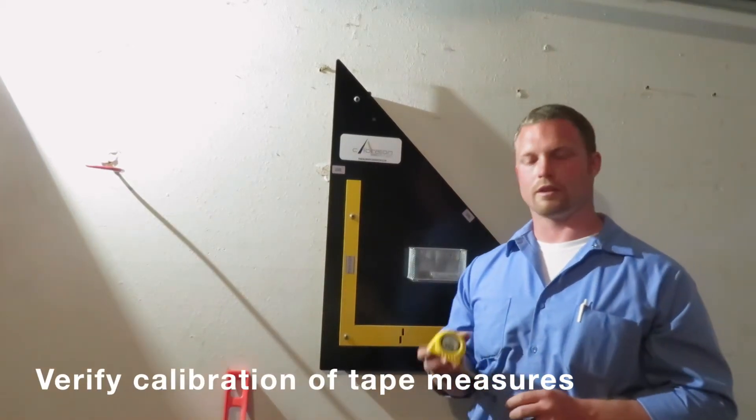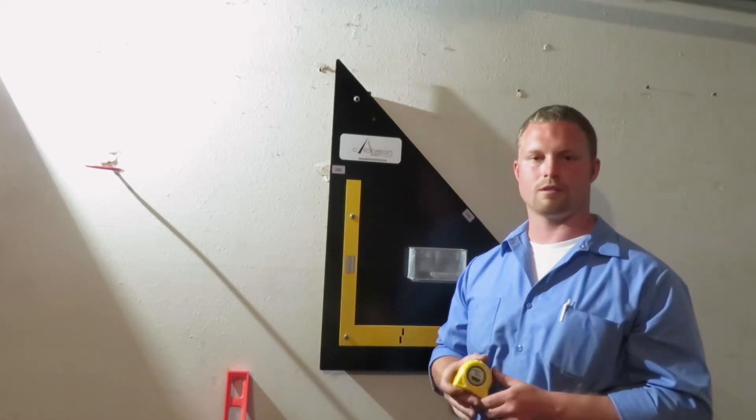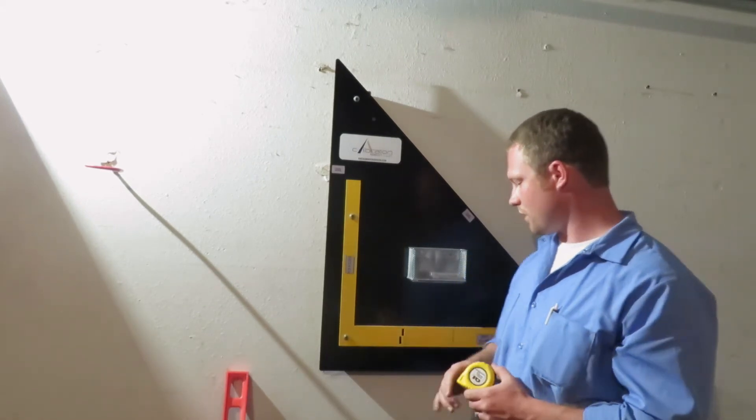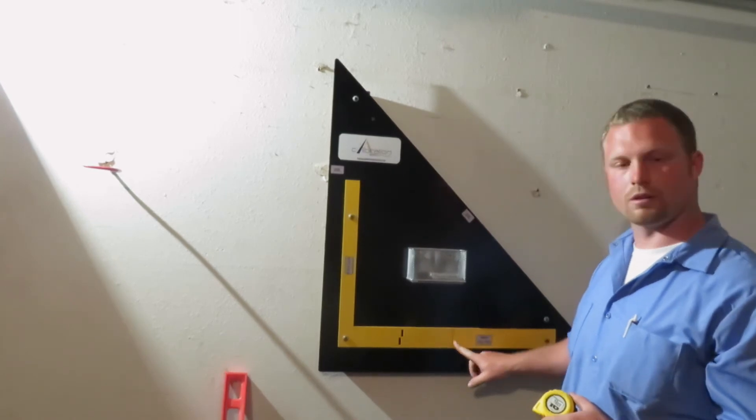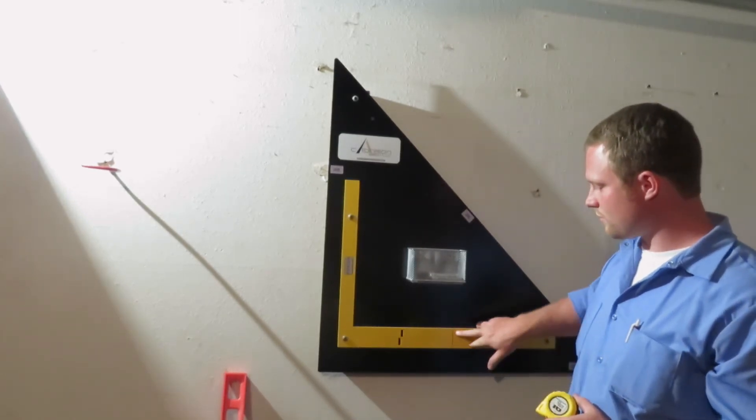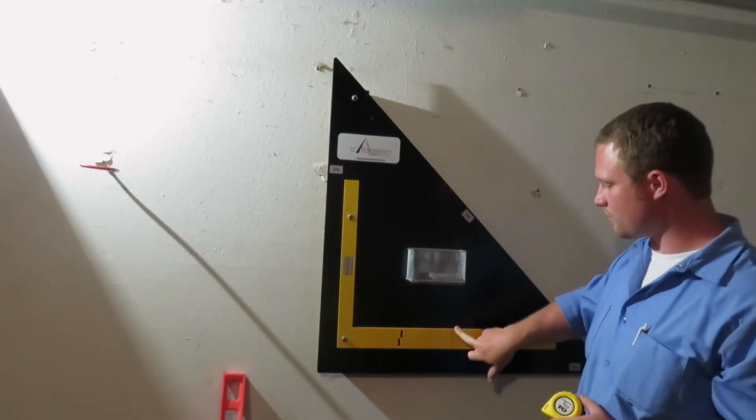The final thing we'll look at today on how to use the calibration station is a tape measure. So you have a calibrated 6-inch mark right here. It's very visible on this yellow paint. It's black.